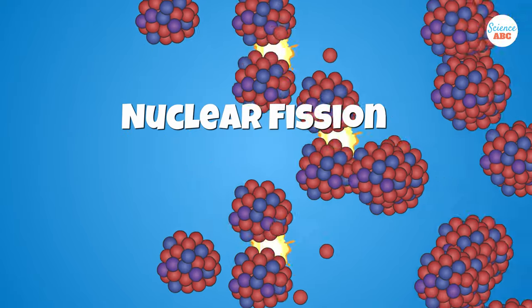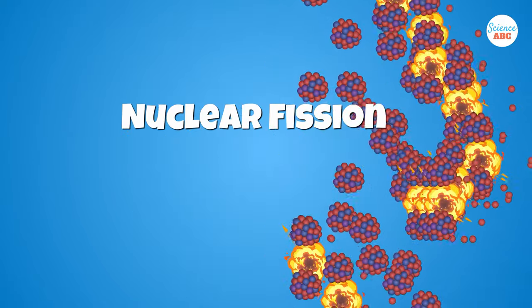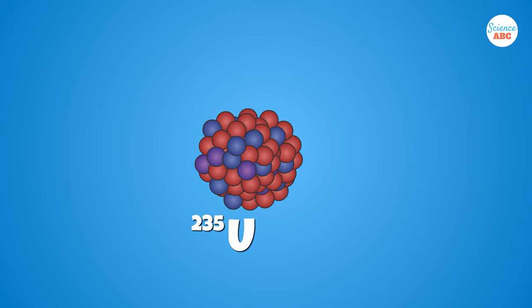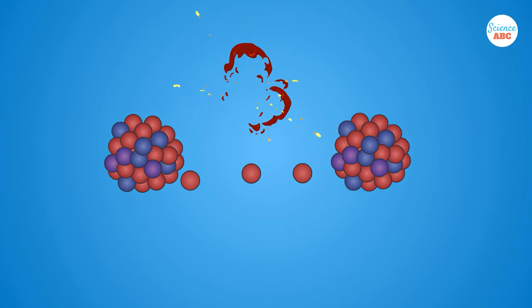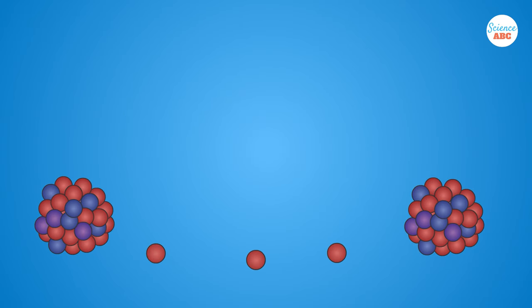Nuclear fission, as the name suggests, is the splitting of an atom. A heavy atom, such as uranium or plutonium, is bombed by neutrons. This collision leads to the uranium being split into two light elements, neutrons, and a lot of energy released as heat.